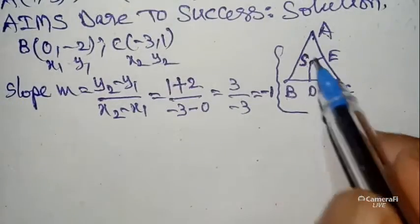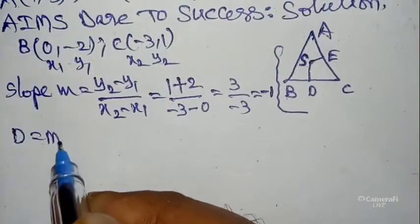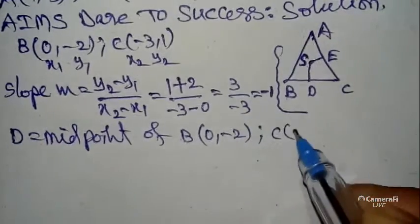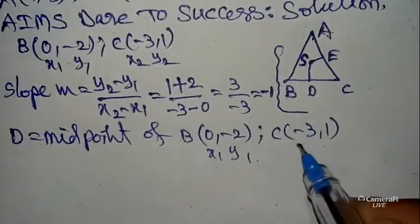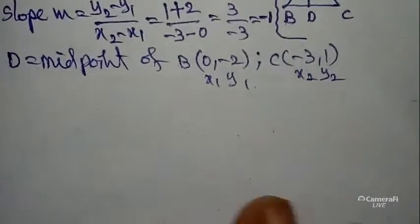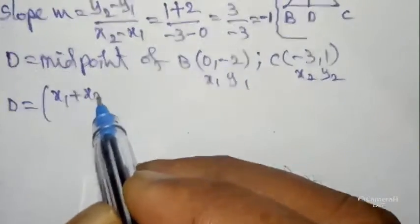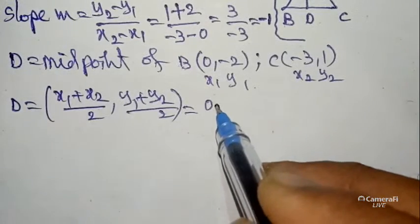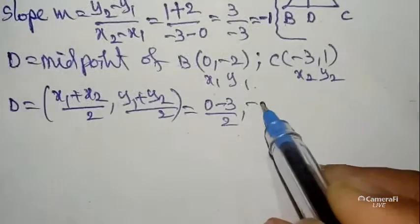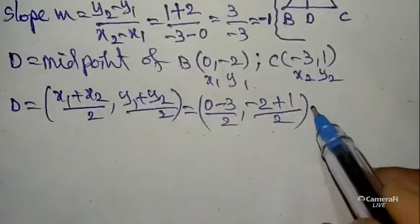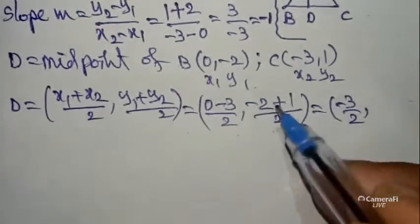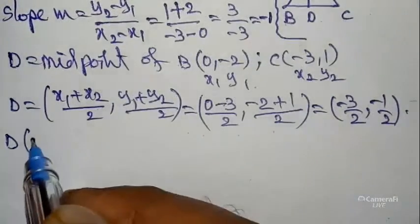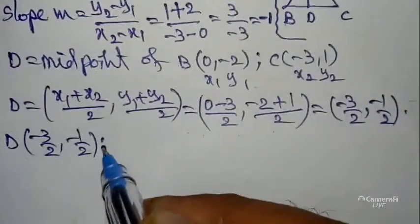Since SD is a perpendicular bisector, D is the midpoint of BC. B = (0, -2) and C = (-3, 1), taken as (x1, y1) and (x2, y2). Using the midpoint formula: ((x1+x2)/2, (y1+y2)/2) = ((0 + (-3))/2, (-2 + 1)/2) = (-3/2, -1/2). So D = (-3/2, -1/2).